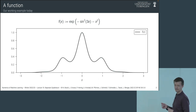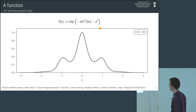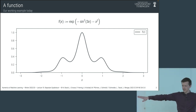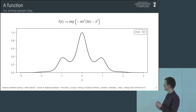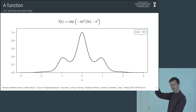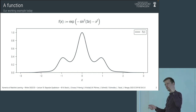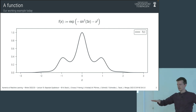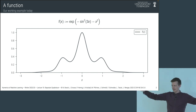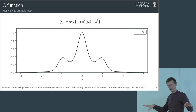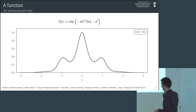That function looks like this. One way to think about it is as a product of two functions: exp(minus sine squared 3x) and exp(minus x squared). The latter is the Gaussian bell curve. Sine squared is a number between 0 and 1, so exp of minus that is between 1/e and 1. We've got our Gaussian bell shape multiplied by some oscillating function that stays between 1/e and 1, so the Gaussian acts like an envelope around this function.